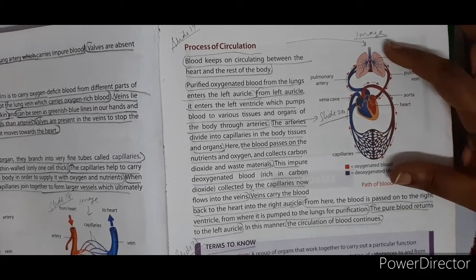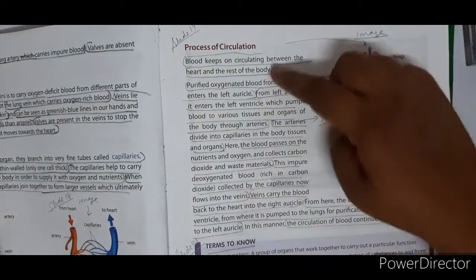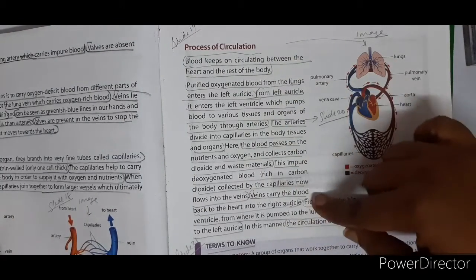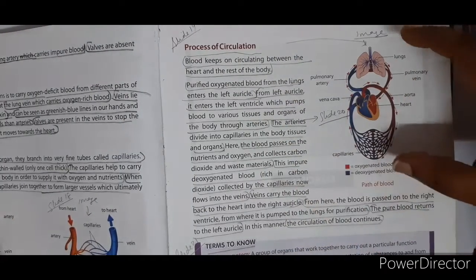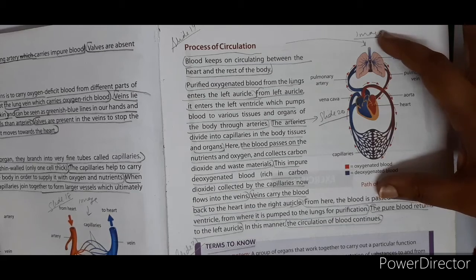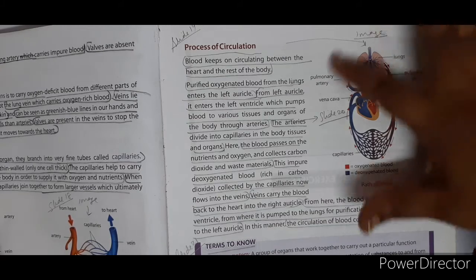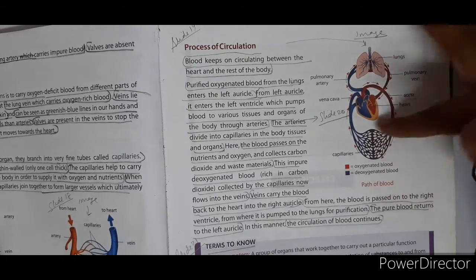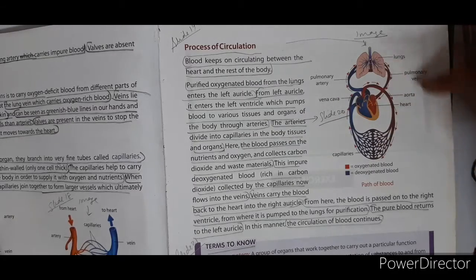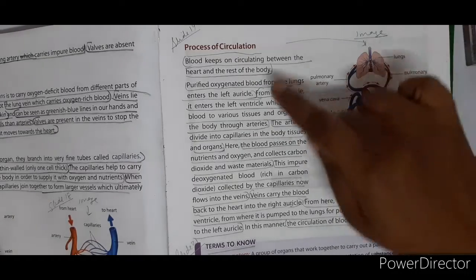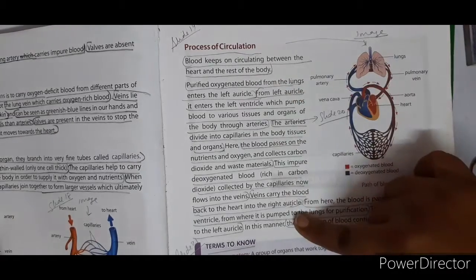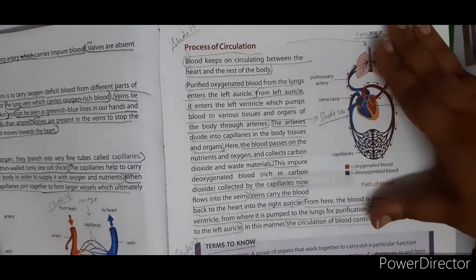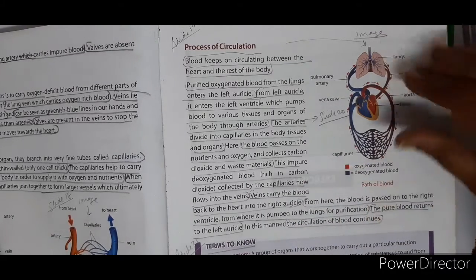You also have to write the process of circulation, and that written process goes in the single line area of your scrapbook. Draw the circulatory path and the circulation system with labeling in the plain part, and write the process of circulation in the single line area. This is your science project.